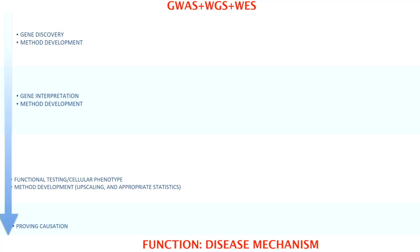We start with GWAS and end with Function, and in between there are a lot of different steps. This is a schematic overview of how I see the research we do. We start with GWAS, which is mostly gene discovery, then continue with gene interpretation, then do functional testing, search for cellular phenotype, and then ultimately prove causation and find a treatment or a pill for IQ or any disease we're interested in.